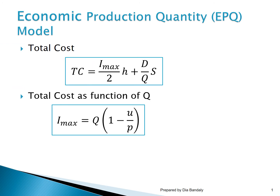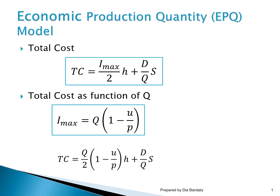Imax is expressed in terms of Q, where it equals Q times (1 minus U over P), where U is the consumption rate or demand rate for external demand, and P is the production rate. We plug this expression for Imax into the total cost formula, which gives us a final equation relating total cost to Q only — Q is the only variable.